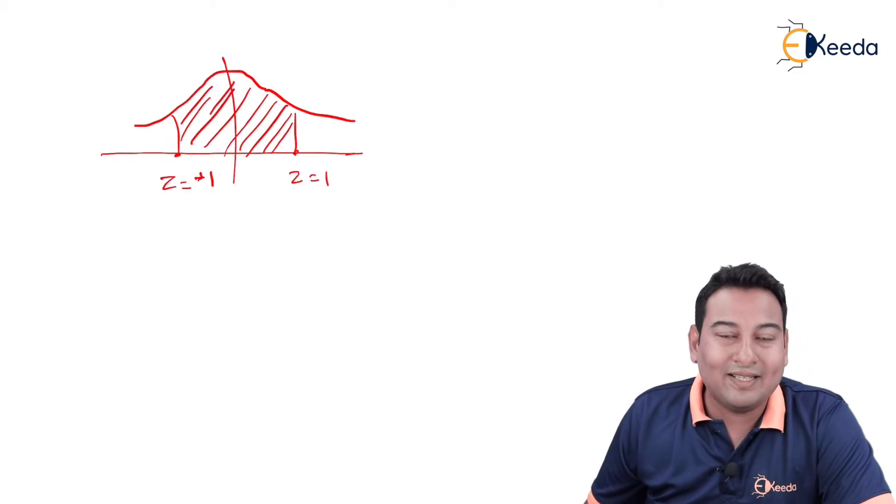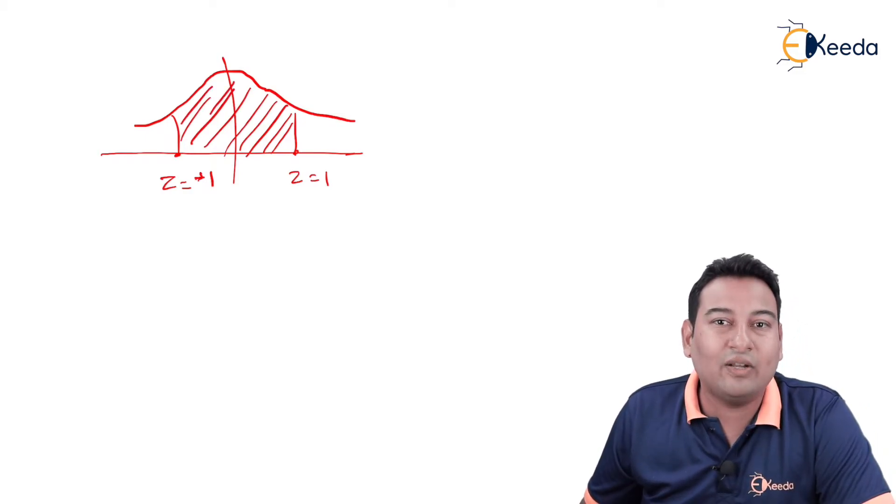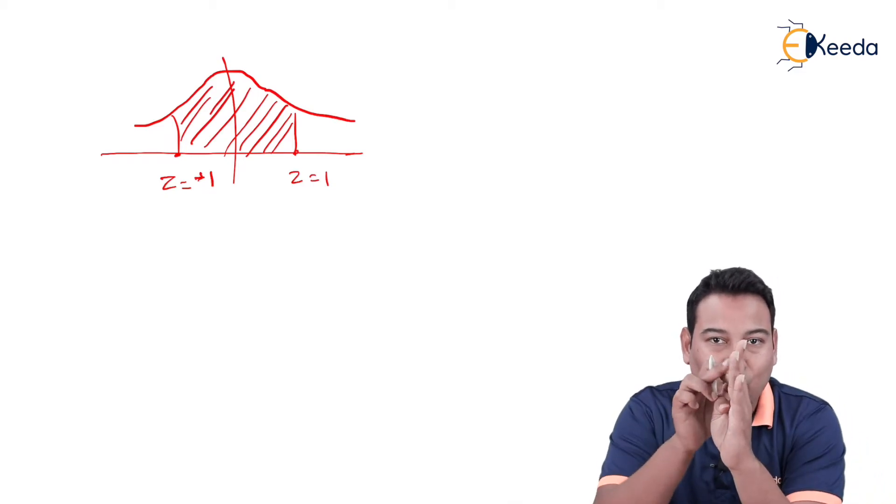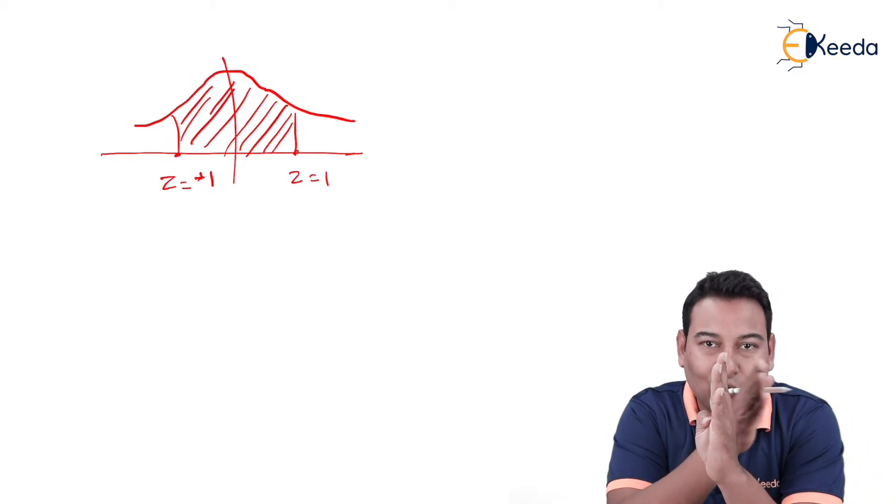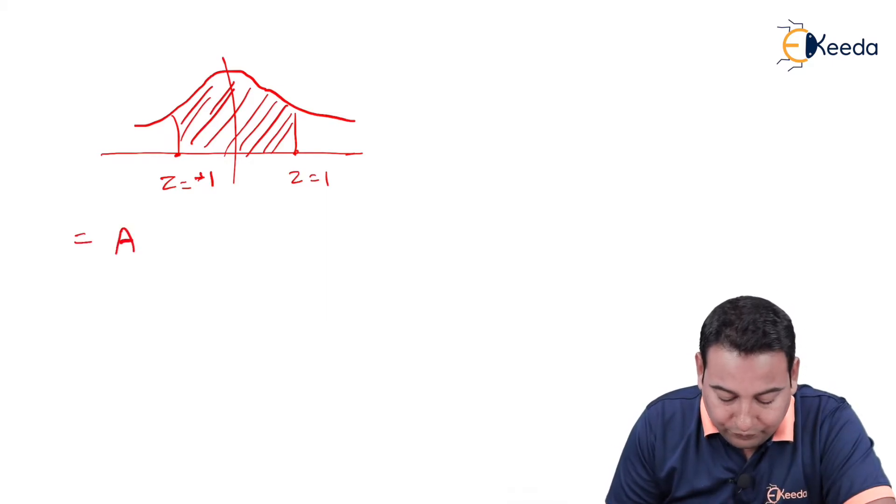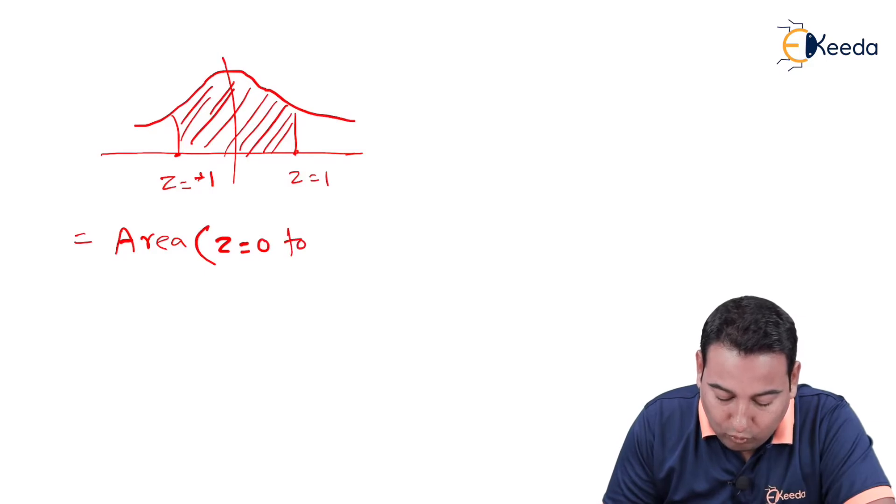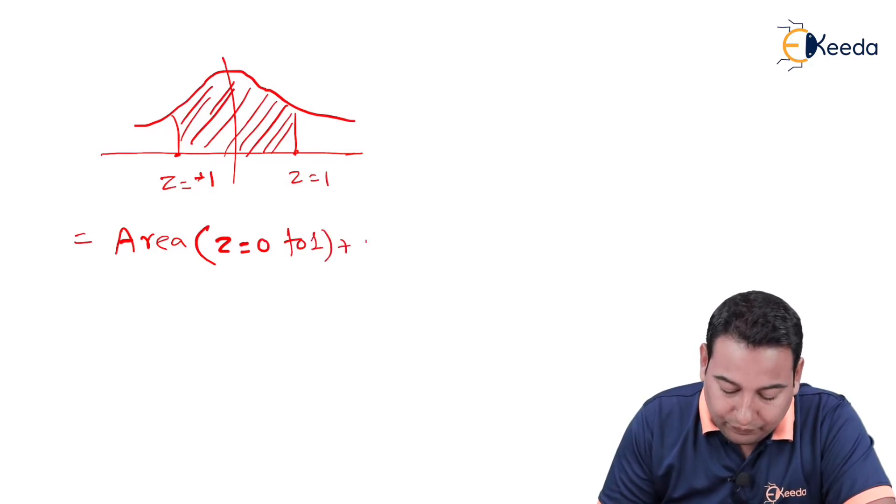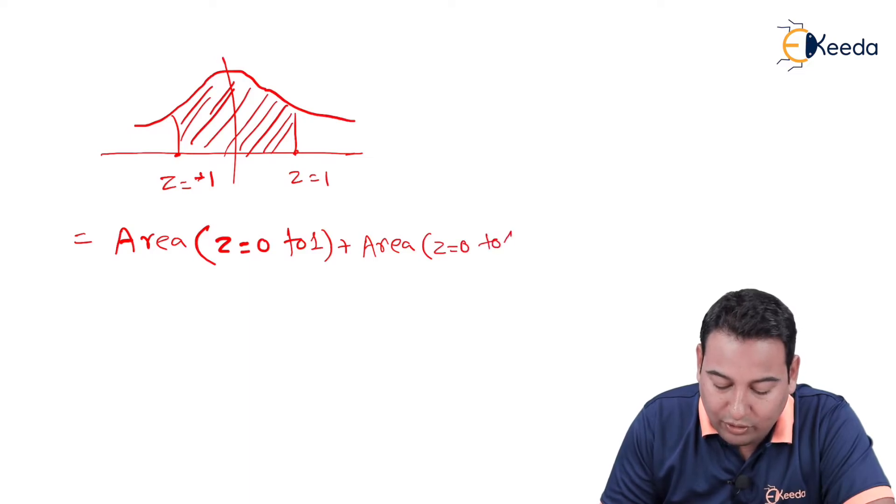That means basically we are going to find it out by dividing into two areas. One is from 0 to 1 and the other one is from 0 to minus 1, which is equal to area from z equal to 0 to 1 plus area from z equal to 0 to 1 because we do not take minus sign.